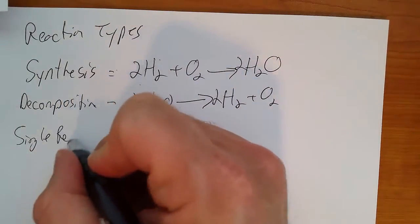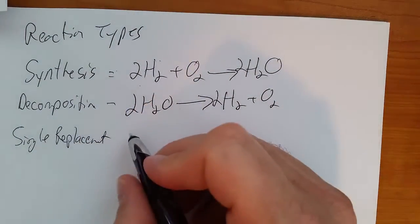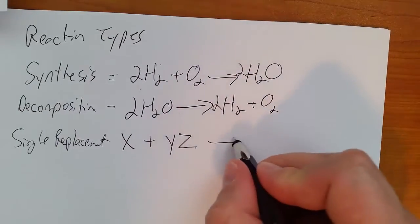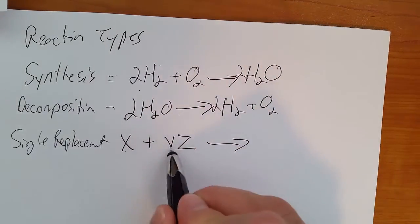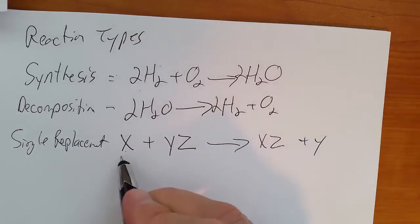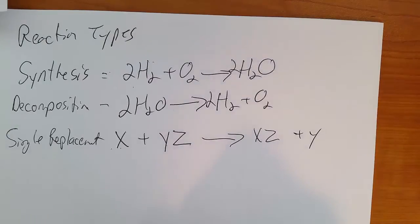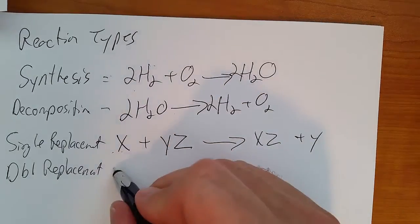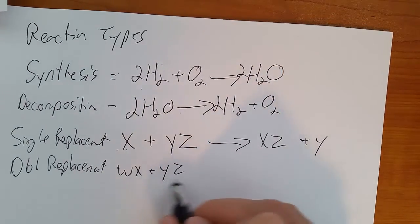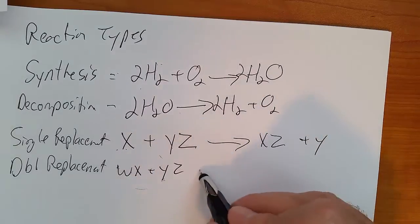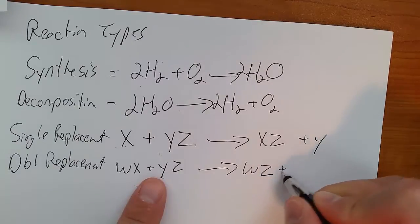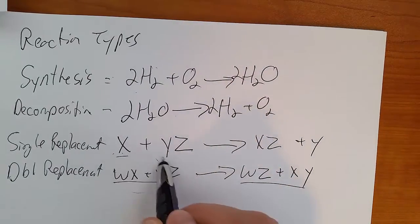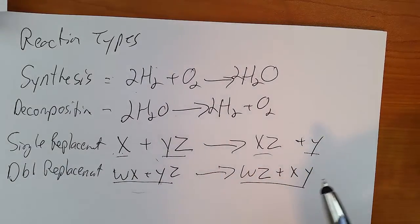Single replacement. That's where you have something by itself, plus a compound. In a case like this, the X replaces the Y. So we get XZ plus Y. The X kicks out the Y. It replaces it. And there's one thing replacing one thing, so it's a single replacement. A double replacement will be something like WX plus YZ, two compounds, and they swap. So we'll swap out the first ones, which is probably the metals, and get WZ plus XY. Double replacement, two compounds on the left, two different compounds on the right. Single replacement has an element and a compound on the left, and a different element and a compound on the right.